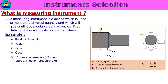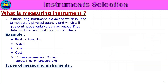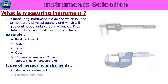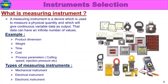Measuring instrument: 3 types — mechanical instrument, electrical instrument, electronic instrument. This is the definition for measuring instrument, used with variable data.